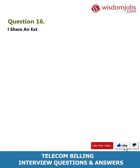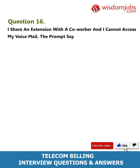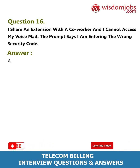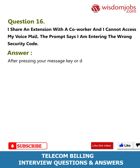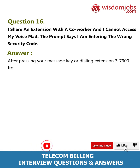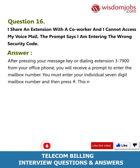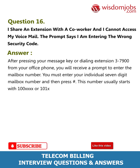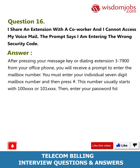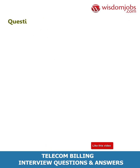Question 16: I share an extension with a co-worker and I cannot access my voicemail. The prompt says I am entering the wrong security code. Answer: After pressing your message key or dialing extension 327-9000 from your office phone, you will receive a prompt to enter the mailbox number. You must enter your individual seven-digit mailbox number and then press hash. This number usually starts with 100XXXX or 101XXXX. Then enter your password followed by hash.